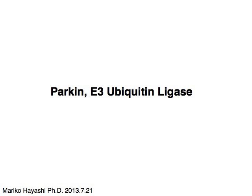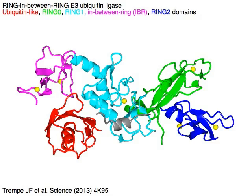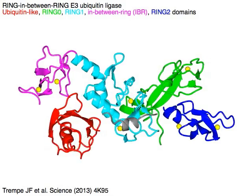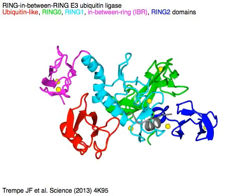Parkin is an E3 ubiquitin ligase in inactive conformation. It is a ring-in-between-ring (RBR) E3 ubiquitin ligase.